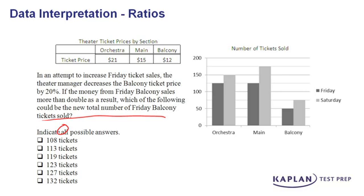Let's start with the current Friday balcony sales. Right now, there's $12 per ticket, and on Friday in the balcony they sold exactly 50 tickets. So for the amount of money earned right now, it's going to be 50 tickets at $12 per ticket, which equals $600. As of right now, they're bringing in $600 in ticket sales.